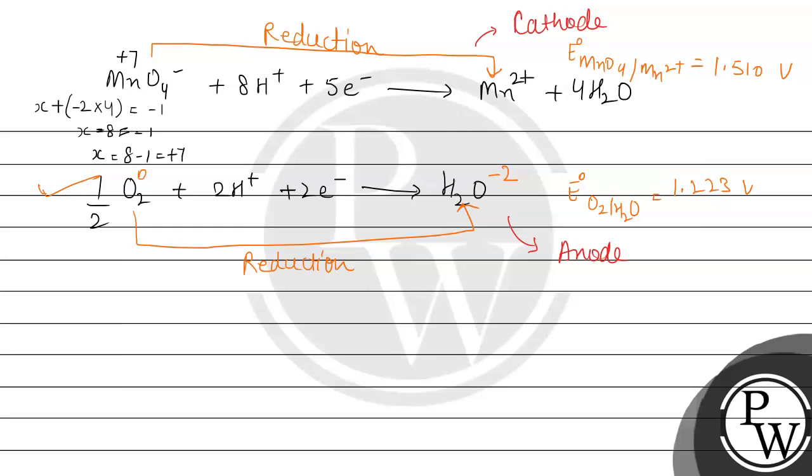So now we can find the E naught cell. Jiske liye formula tha cathode minus anode. So 1.510 minus 1.223. So jab hum subtract karenge, it will come out to be 0.287 volt. So positive mein value hai, which means it is spontaneous.